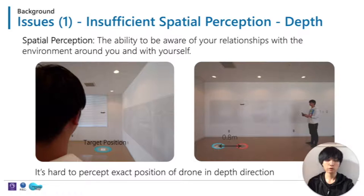Accurate controlling of the position and direction of a drone is difficult, because it requires high operational skills, which is not an easy task even for experienced users. Here are the reasons. First, insufficient depth spatial perception. Spatial perception means the ability to be aware of relationships with the environment around you and with yourself.